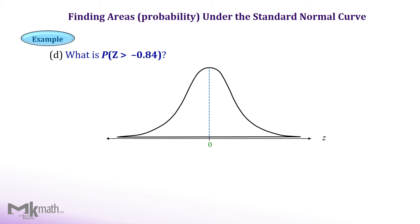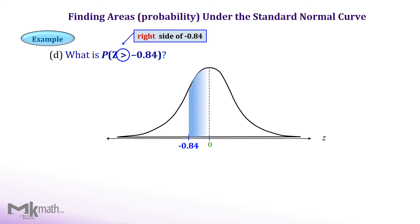Let's take a look at another example. Mark the given z-score, negative 0.84, on the normal distribution. Mark it on the left side of the center since it is negative. Once we locate the z-score, then read the direction. We read it as greater than minus 0.84, so we need to find the area to the right of z equal minus 0.84.